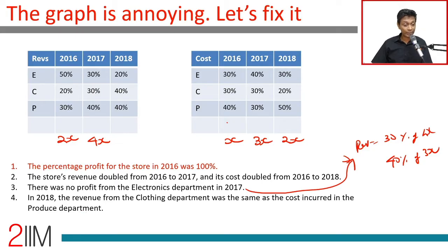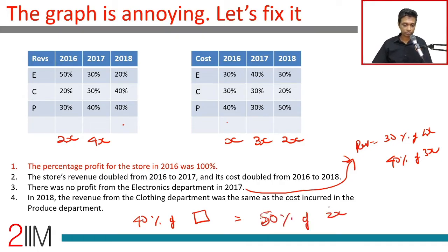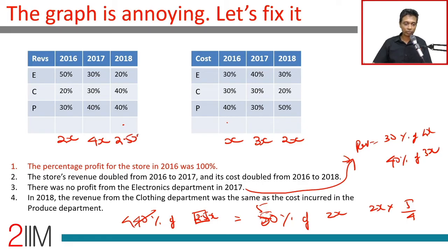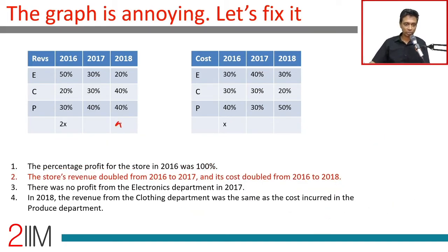In 2018, revenue from the clothing department was the same as cost incurred in the produce department. Clothing revenue is 40% of 2018 total revenue. Produce cost is 50% of 2018 total cost, which is 50% of 4x divided by 2 — working through: 40% of revenue = 50% of cost, giving 2018 revenue as 2.5x and 2018 cost as 2x.